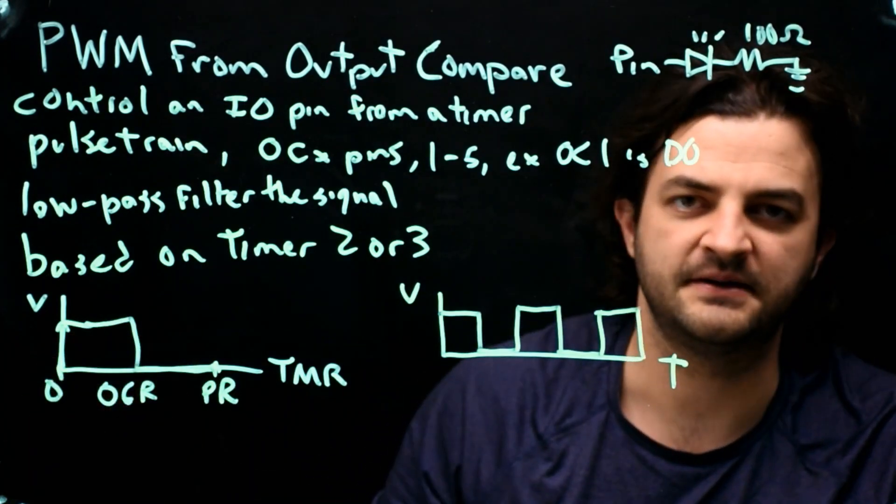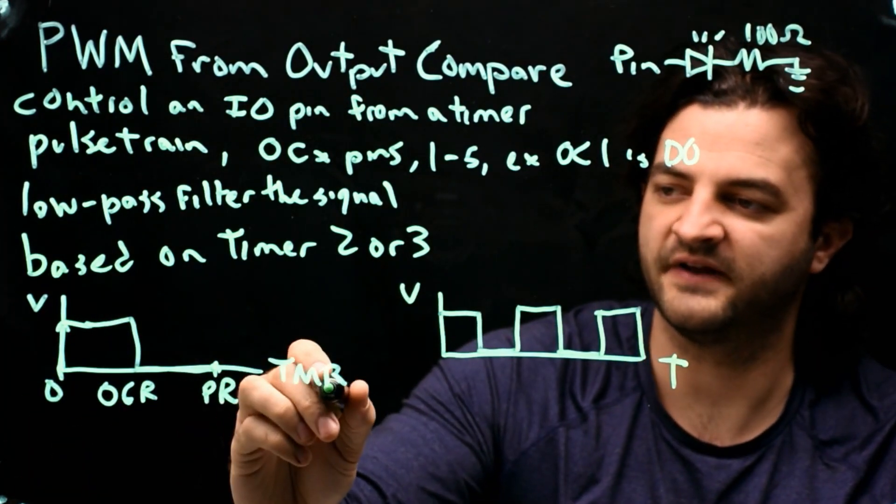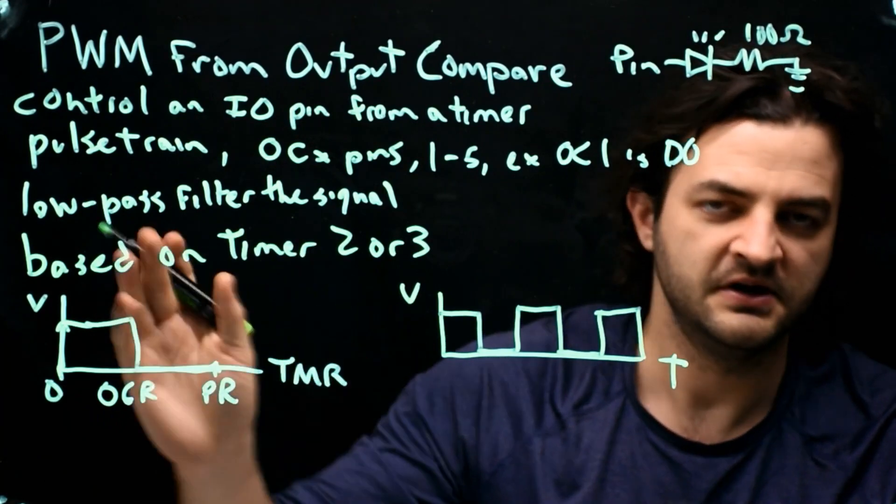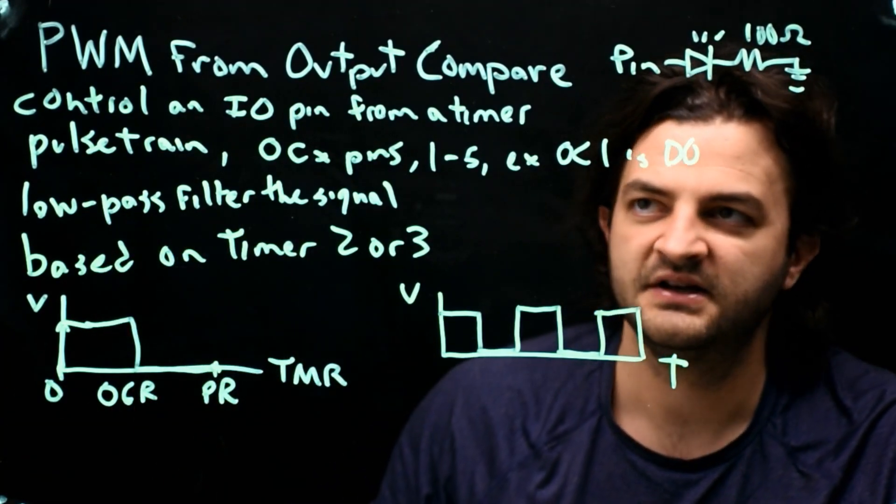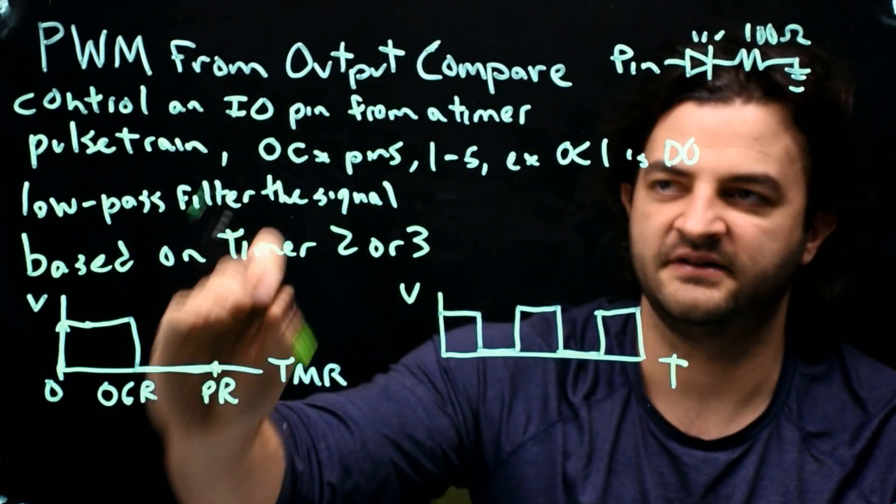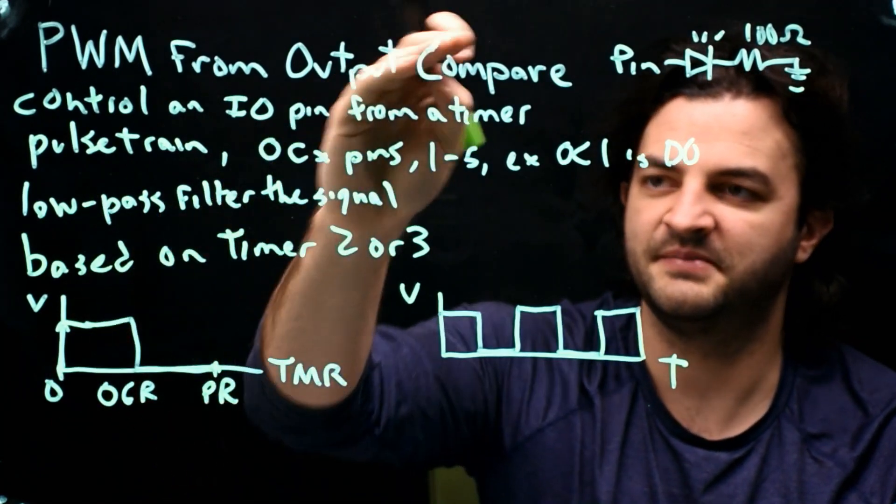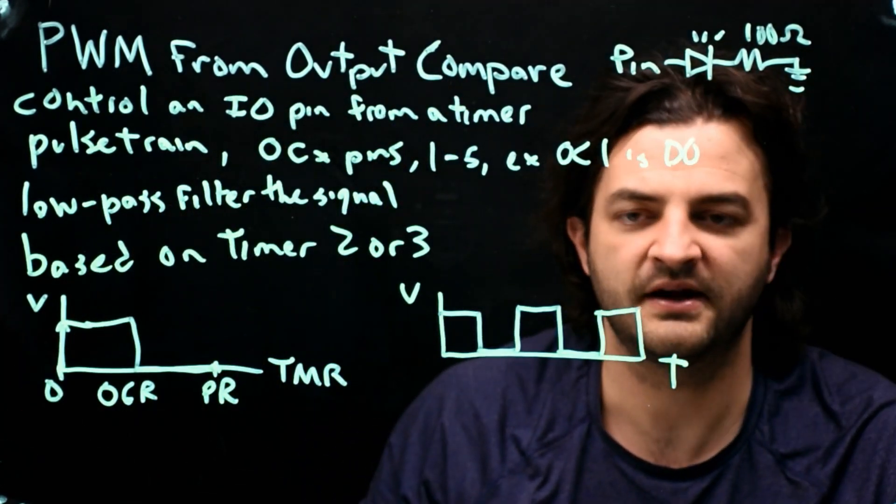We don't have to manually have an if statement that says if the timer value is equal to OC1R, make the pin go low. That all happens automatically in the background. So that's the compare part of this statement. Output a pin, compare it to the value of the timer, do it all automatically.